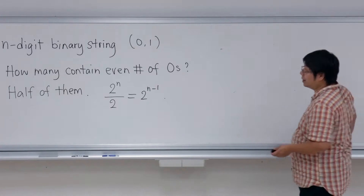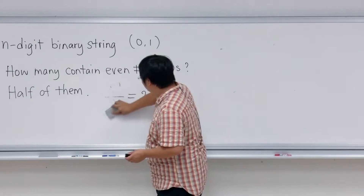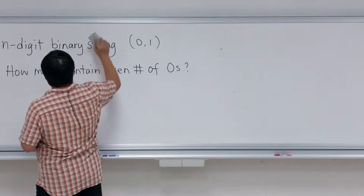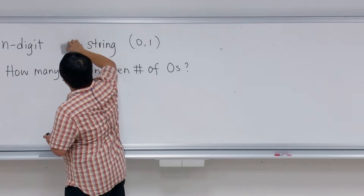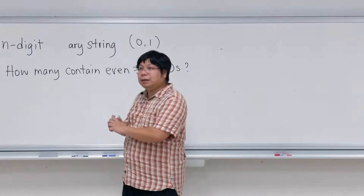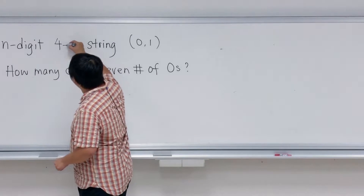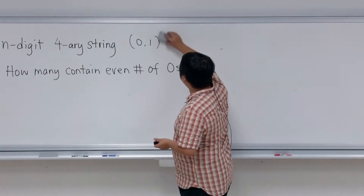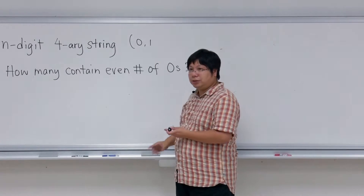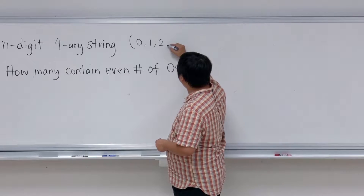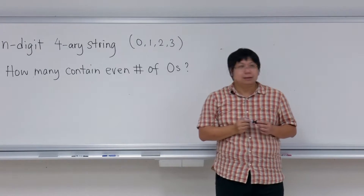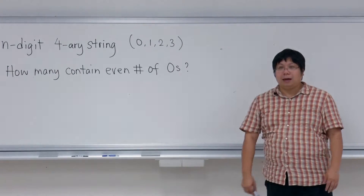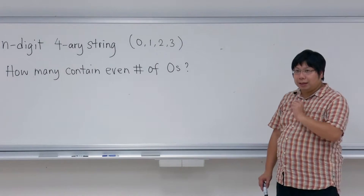The next problem is going to be even harder, but it is related. This time, let's look not at binary strings but at quaternary strings. In a quaternary string, each digit can be zero, one, two, or three. We are asking the same question: how many of them contain an even number of zeros?